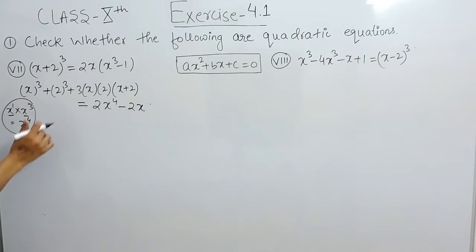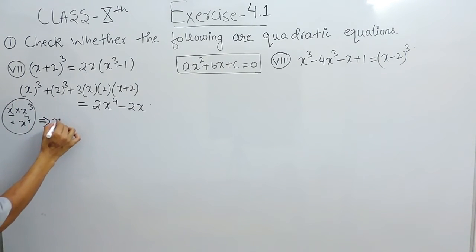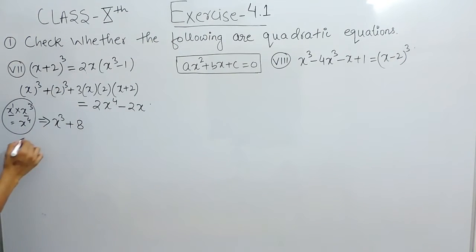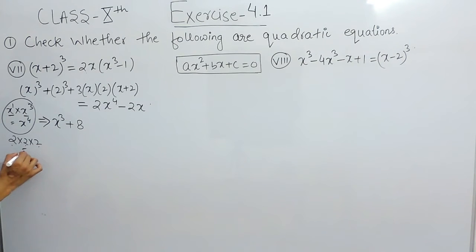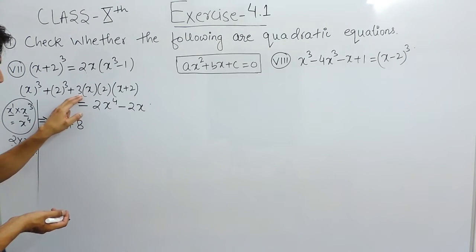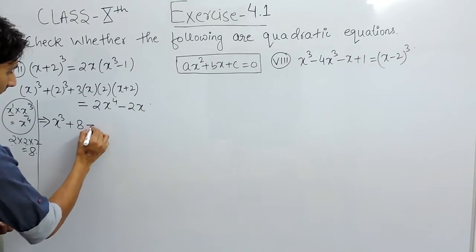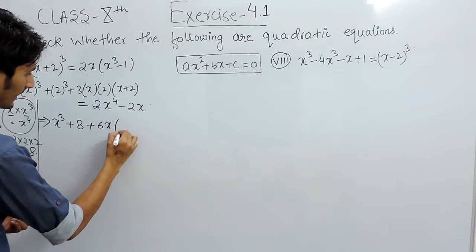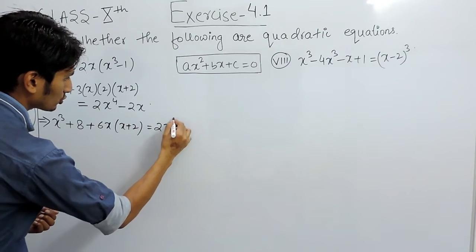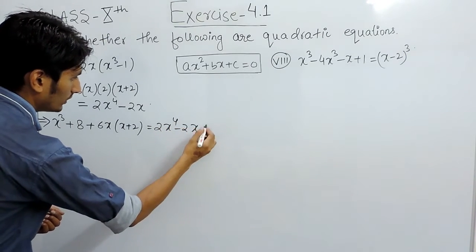And clearly 2x multiplied by 1 will give minus 2x. After that you can further solve it. This will become x cube, and 2 cube is basically 8 — that is 2 × 2 × 2 = 8. So 3 times x times 2 is basically 6x, and this is x plus 2. This is equal to 2x raised to the power 4 minus 2x.